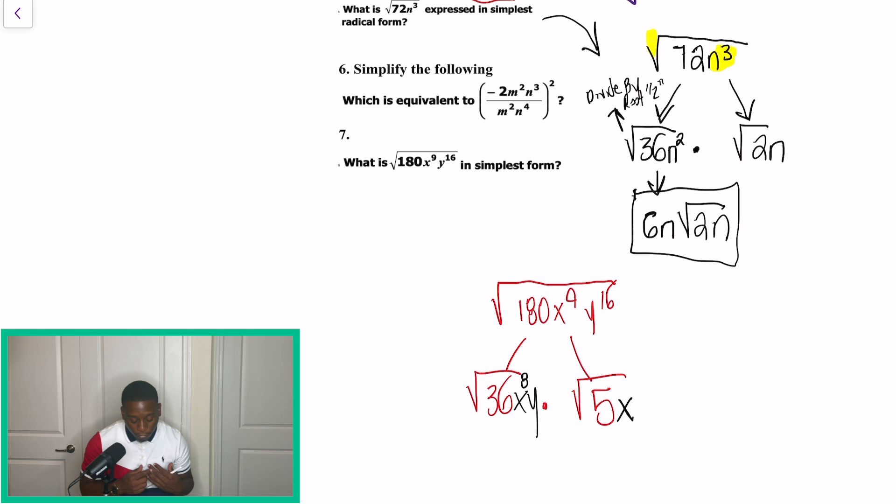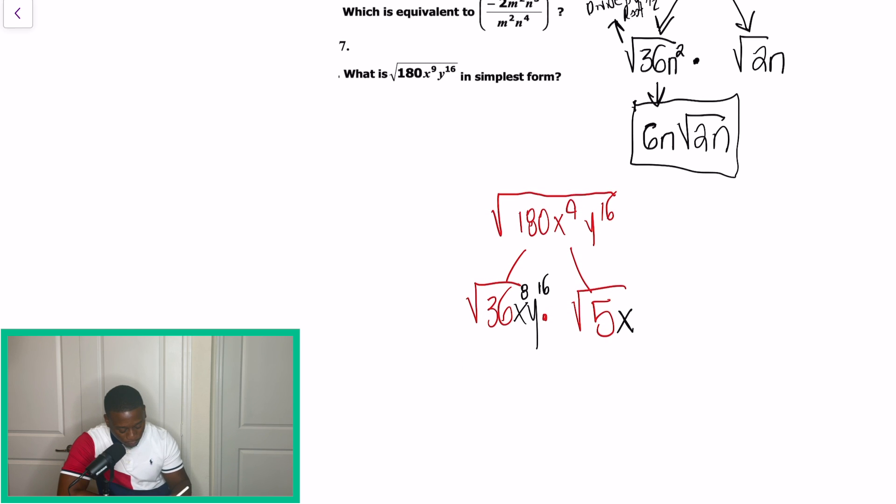Now, luckily for us, as we look at the variable y to the 16th, we have an even number. So we're just going to keep that variable and exponent with the perfect square because we can divide evenly by 2. So now, we're going to break this down, and we know that 36 is going to turn into 6. It's square root. And then when we divide 8 by 2, we're going to get x to the 4th power. And when we divide 16 by 2, we're dividing by the root, we're going to get y to the 8th. Now, radical 5x, we can't break that down anymore, guys. So what we need to do now, bring it down, and this will be our final answer.